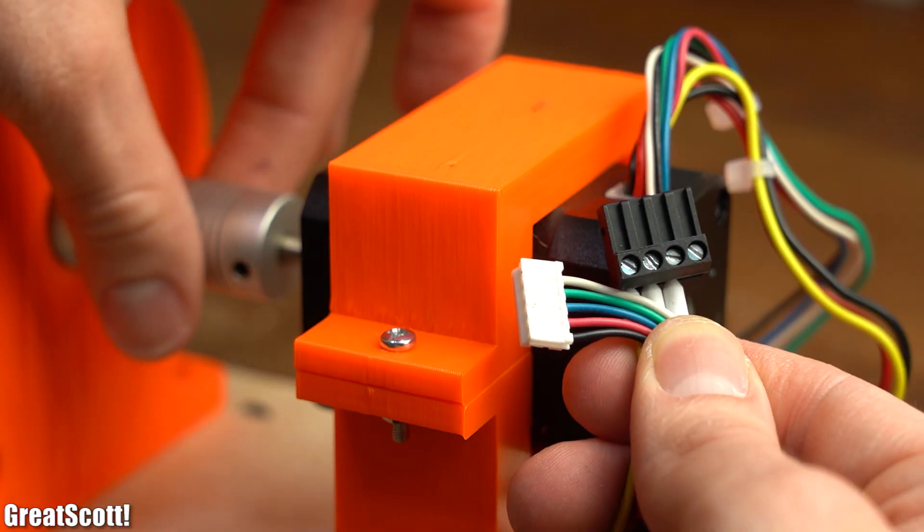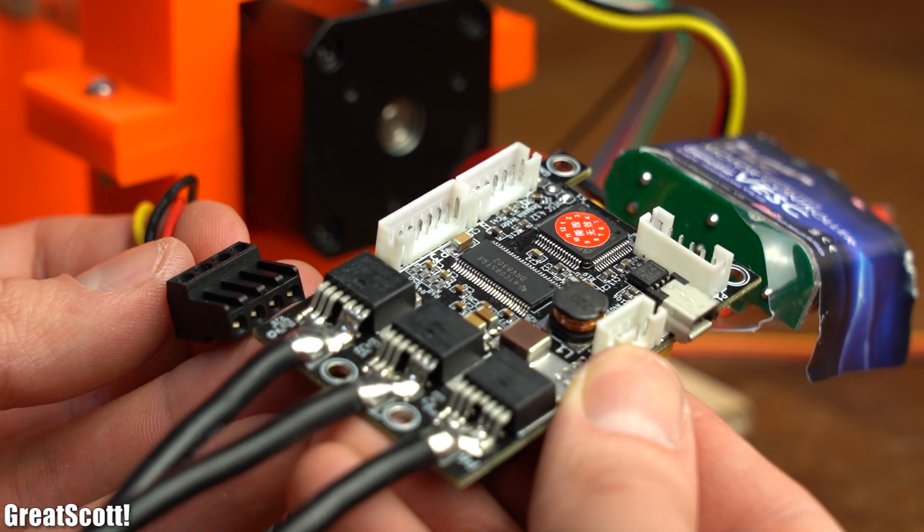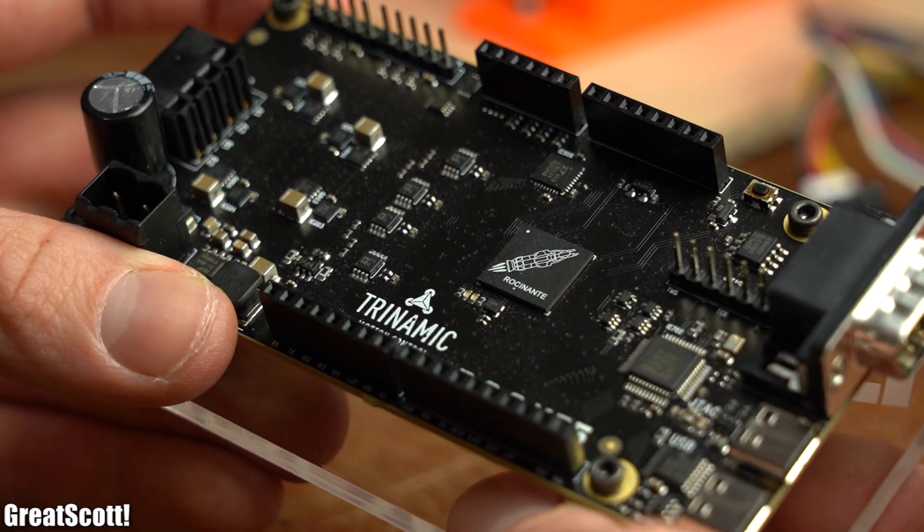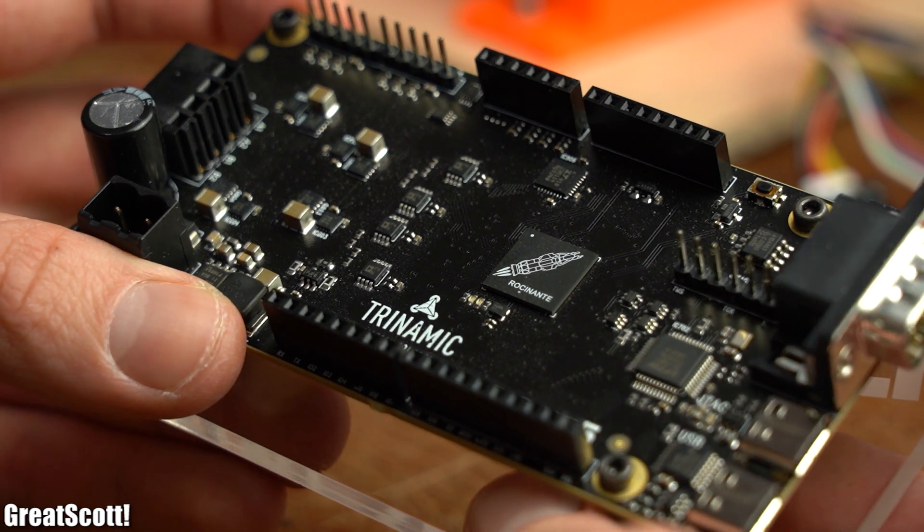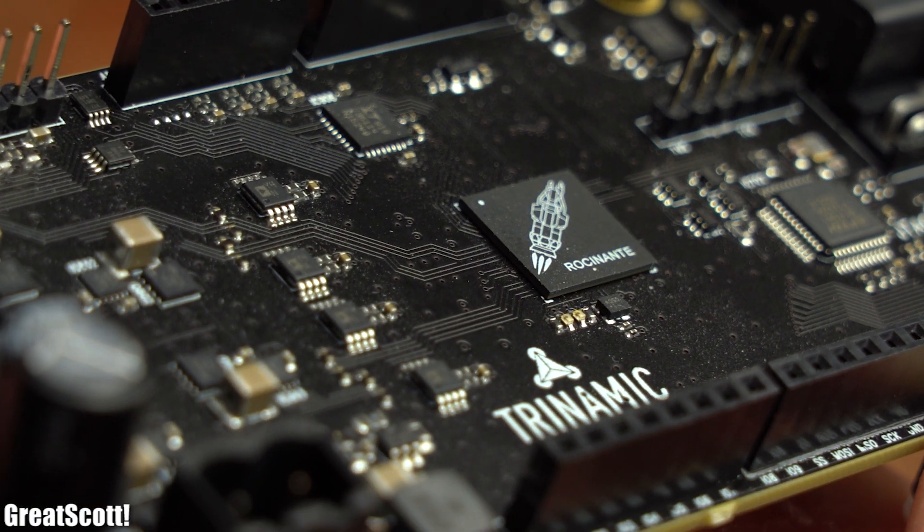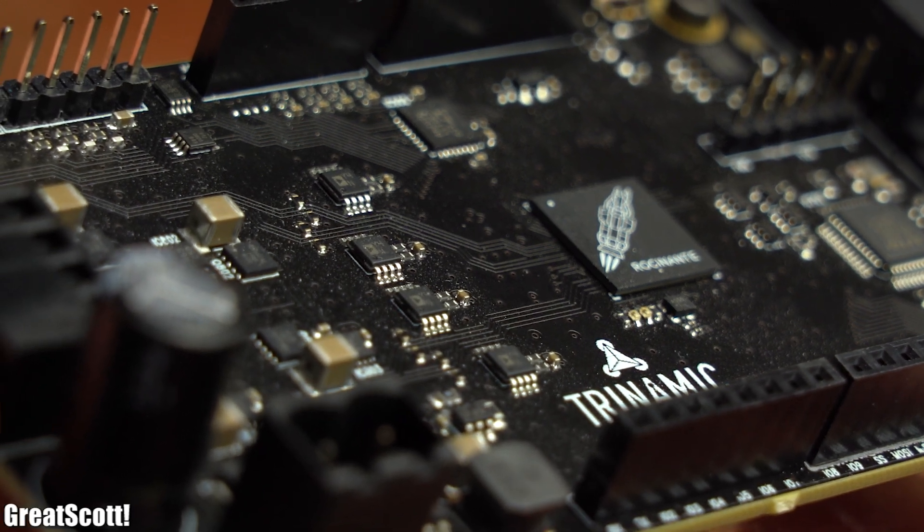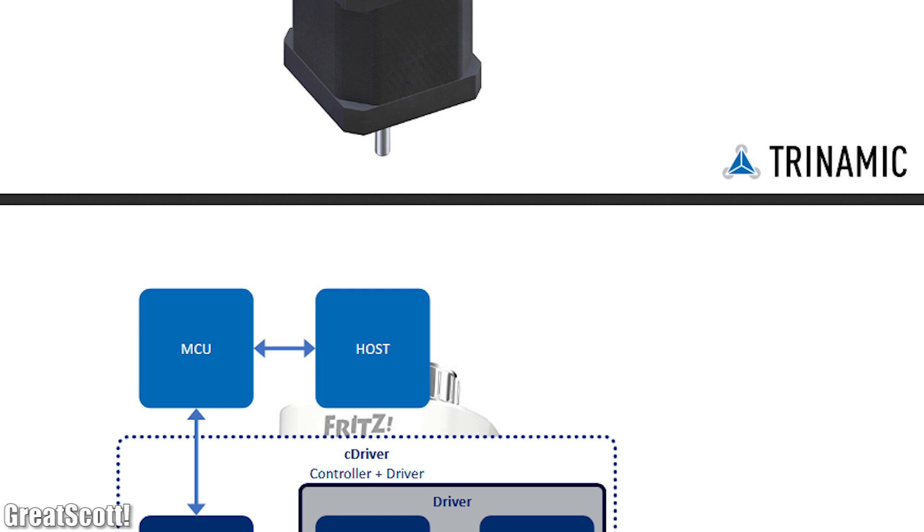Now finally we need to drive the BLDC motor, for which we could use a generic ESC. But like already mentioned, Trinamic sent me this new DOC5 prototype board that combines a RISC-V MCU with a motion controller, which is pretty unique.